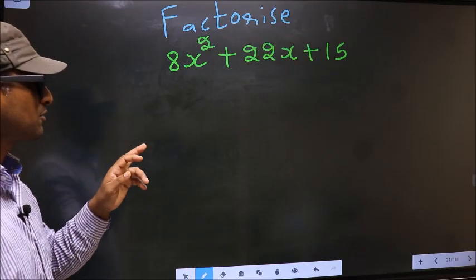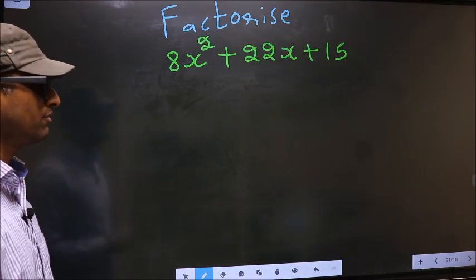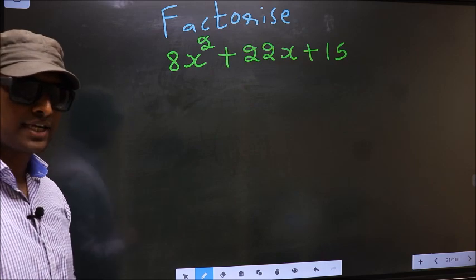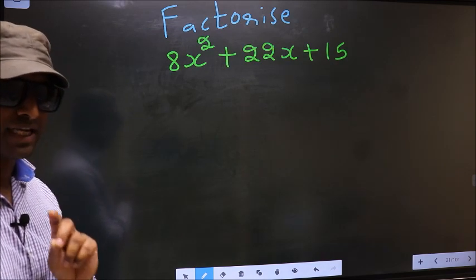Factorize 8x squared plus 22x plus 15. To factorize, step 1: